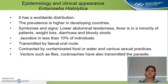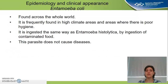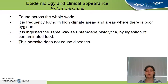Vectors seen to transmit this parasite include flies and cockroaches. Entamoeba coli is also found across the world, with higher frequency in warmer climates and areas with poor hygiene. It is ingested in exactly the same way as Entamoeba histolytica, but this parasite does not cause any diseases, so it's not a problem in our society.